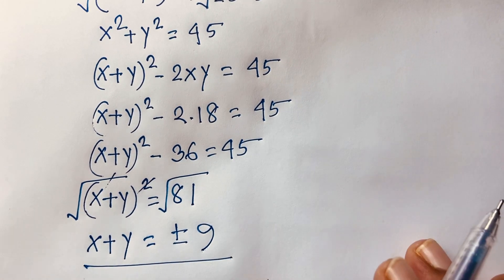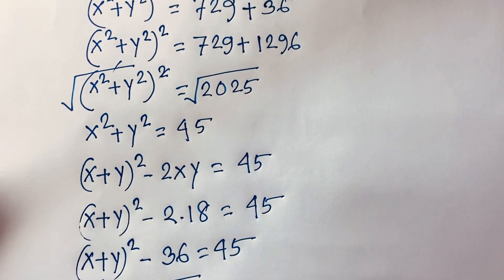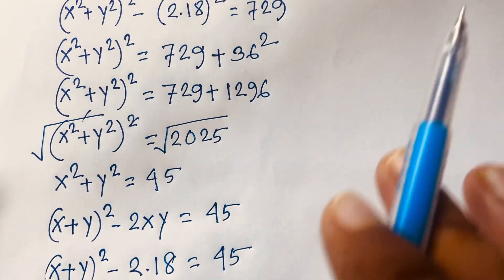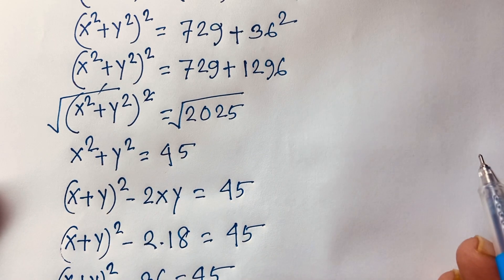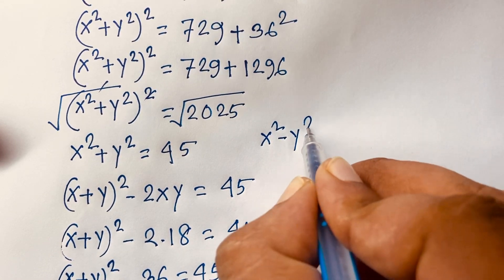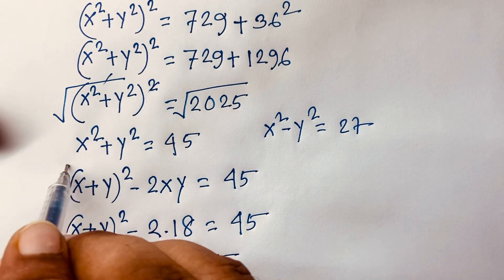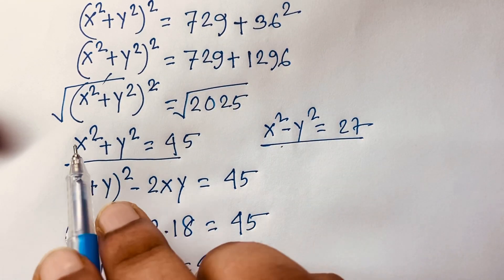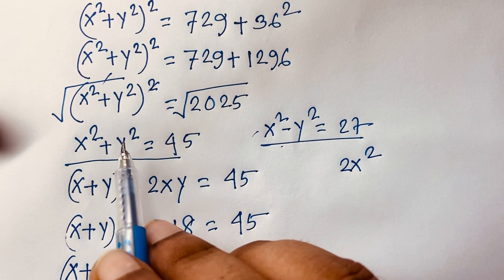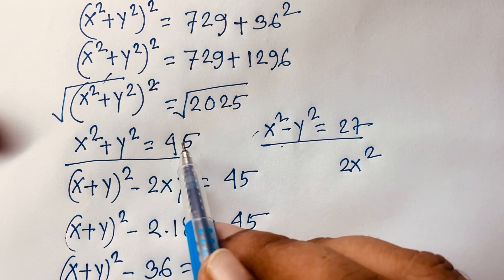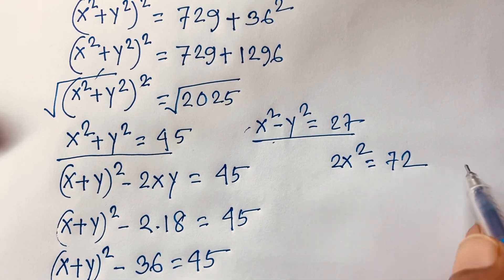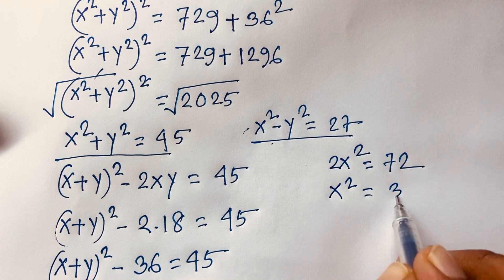Now if you solve this question by another method: our first equation is x squared minus y squared equals 27, and we found that x squared plus y squared is 45. If I add these two equations, the y squared terms cancel, and I get 2x squared equals 45 plus 27, which is 72. Dividing both sides by 2, x squared equals 36.